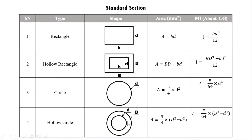For a hollow circular section, the area is (π/4)×(D² − d²), and the moment of inertia about the x and y axes is (π/64)×(D⁴ − d⁴). These are the moments of inertia of standard sections, useful for determining bending stress and shear stress.